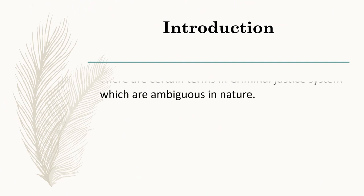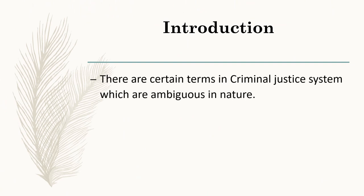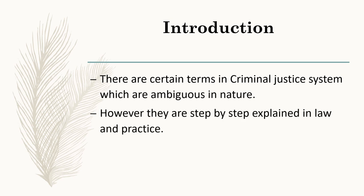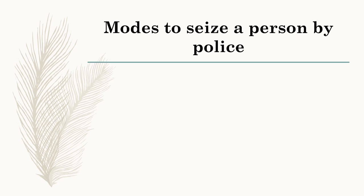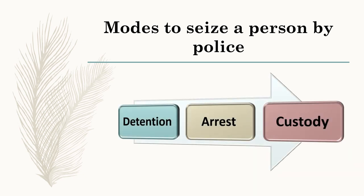There are certain terms in the criminal justice system which are ambiguous in nature. However, they are step by step explained in law and practice. Police have the power to seize someone under many grounds. The modes under which a person can be seized by the police are Detention, Arrest and Custody. Usually people get confused between these three but they have different meanings.